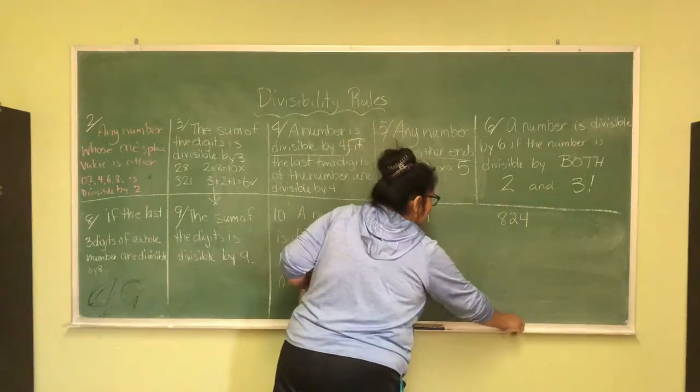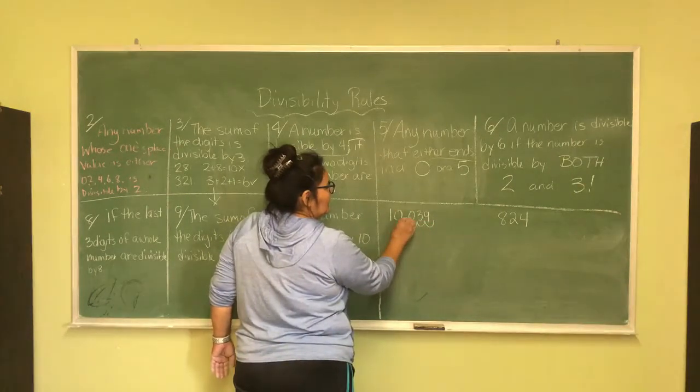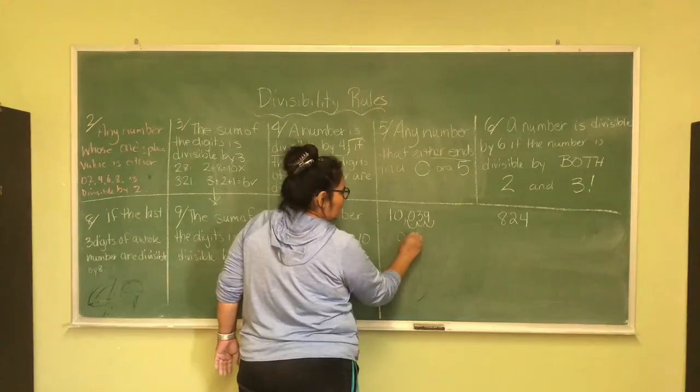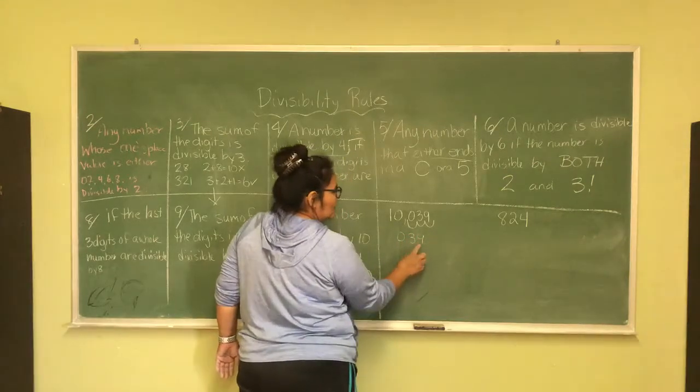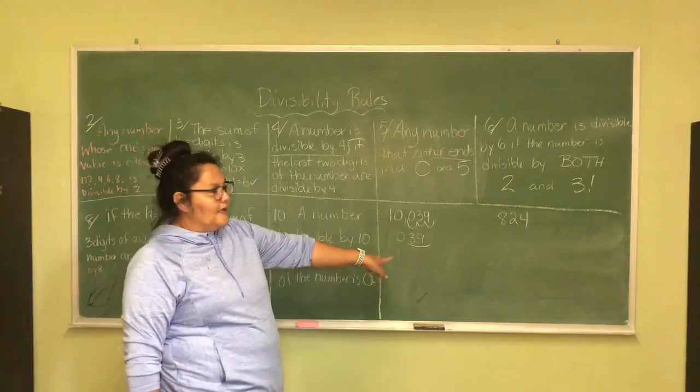So, according to that rule, it's saying that 1, 2, 3, 0, 3, 9, in other words, 39, is 39 divisible by 8?